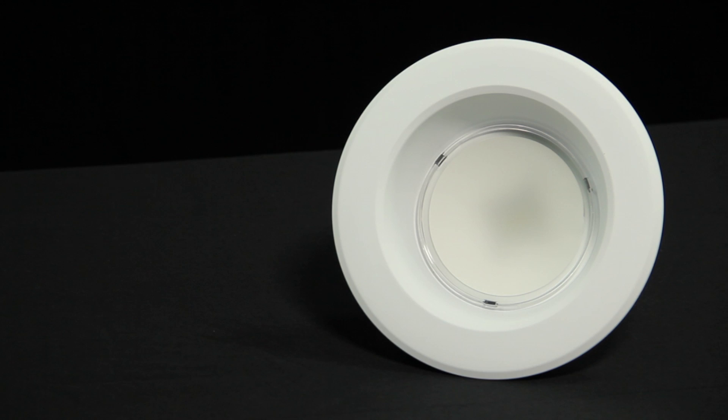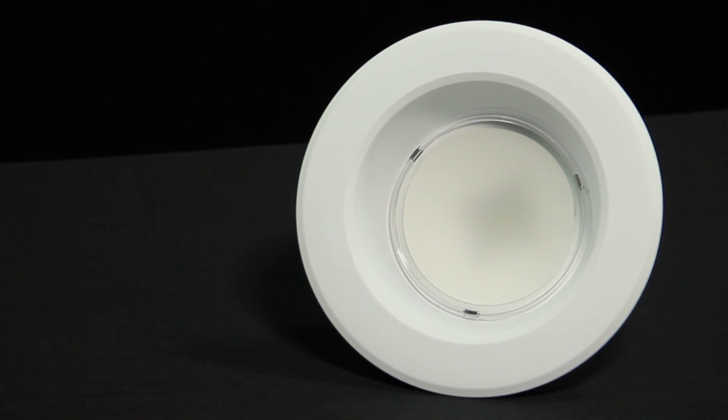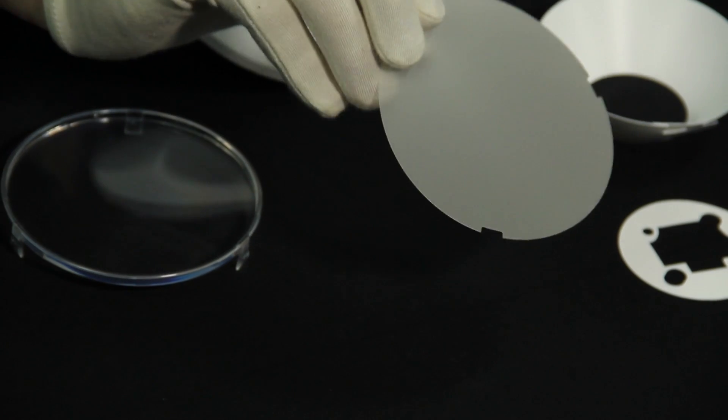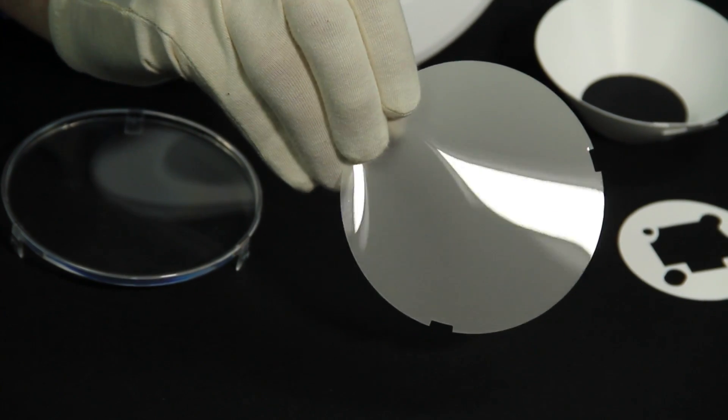Before we insert the diffuser let's first take a closer look at the film. Notice that the lens or microstructure side has a textured finish while the substrate side has a gloss finish.